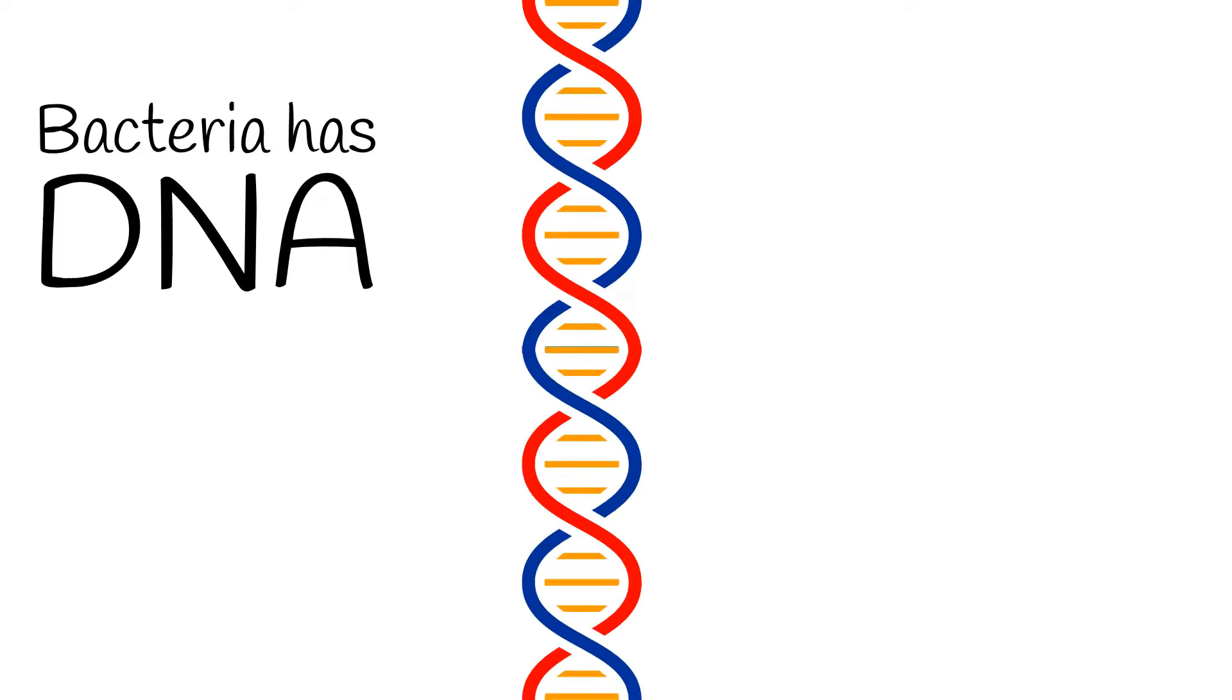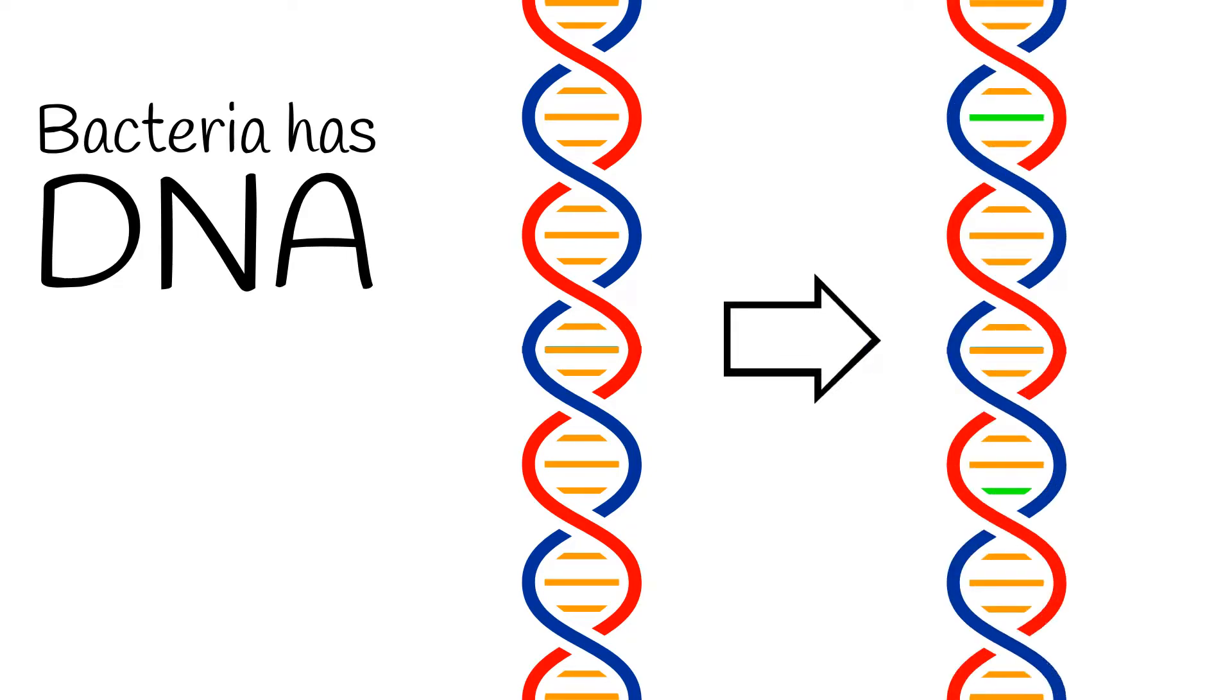Bacteria has DNA. And when it reproduces, it makes an exact copy of itself. So when scientists make a vaccine against a bacterial infection, like pneumococcal pneumonia or pertussis, whooping cough, they only need to change one small bit. That makes them easier to make and is why we only need to get them once or twice to keep us safe.